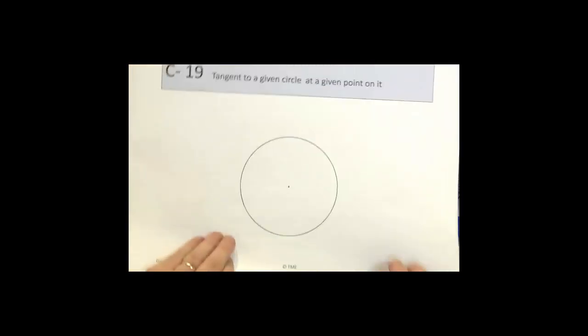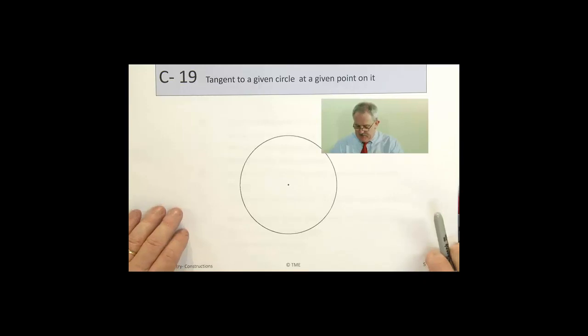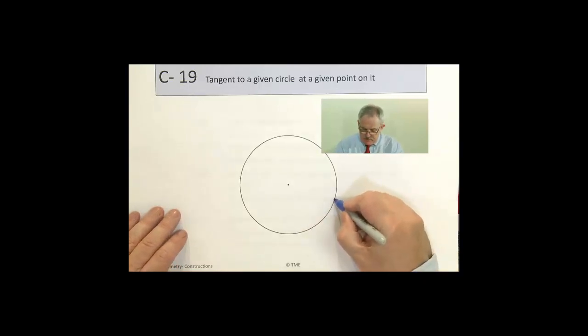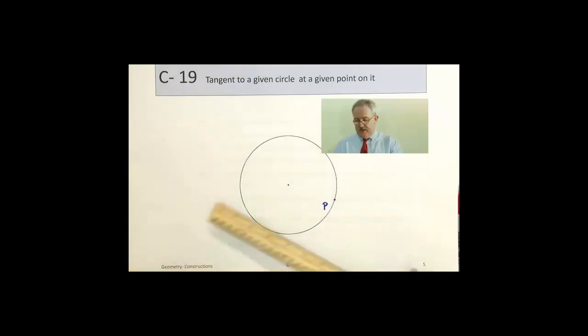So here we have a circle, a point in the centre, and we have a tangent at a given point on it. So let's just pick a point here, maybe this point here, P, and we wish to construct a tangent at it.